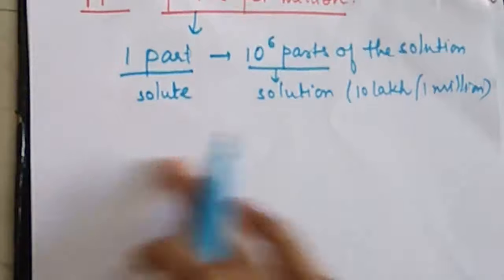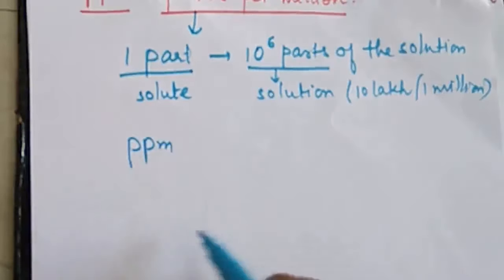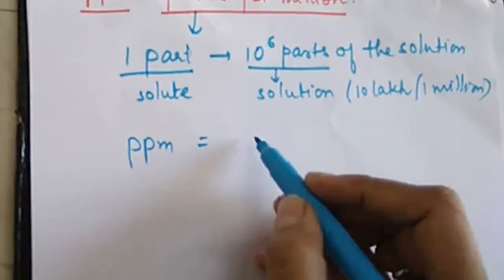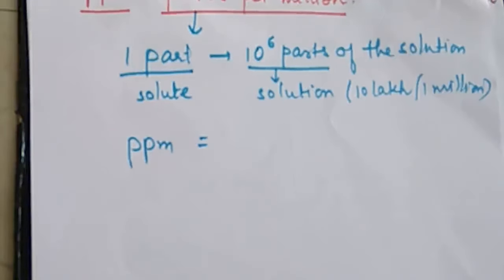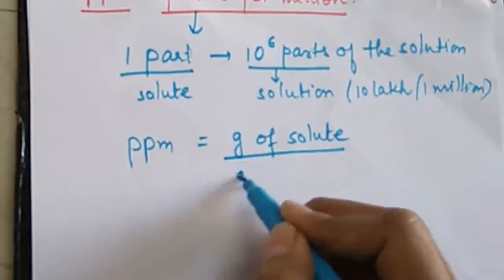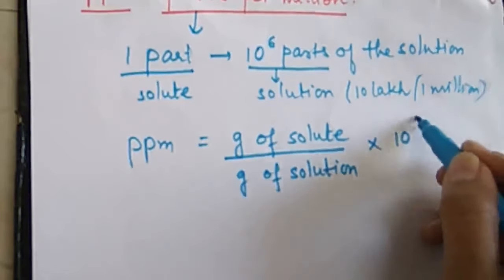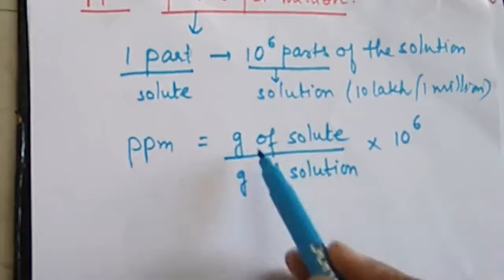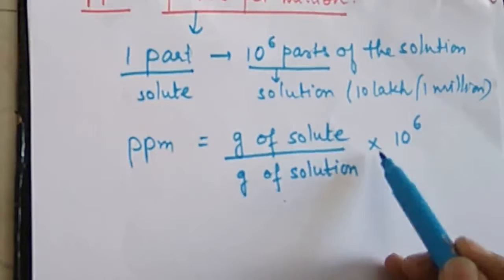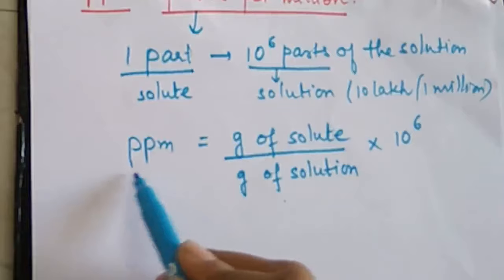Now, how do we use this in terms of calculation? The formula for PPM is: parts of the solute divided by parts of the solution, in whatever units we take — for example, grams of solute divided by grams of solution — multiplied by 10 to the power 6. This tells us how many grams of solute are present in the total grams of the solution.